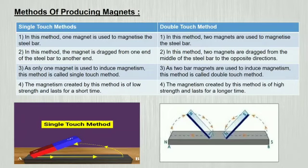Whereas in double touch method, two magnets are used to magnetize the steel bar. In single touch method, the magnet is dragged from one end of the steel bar to another end.